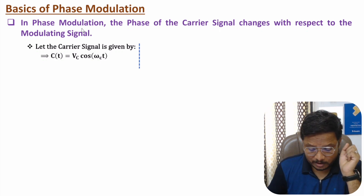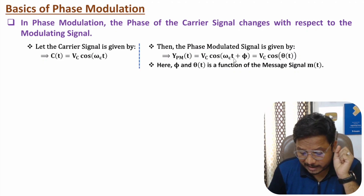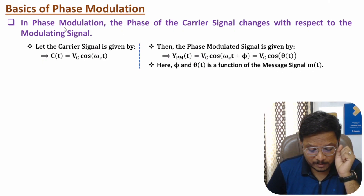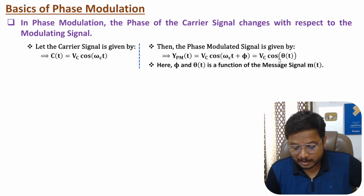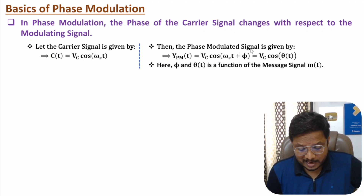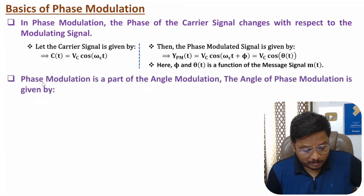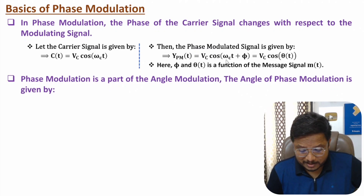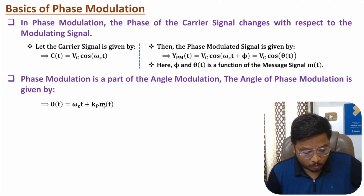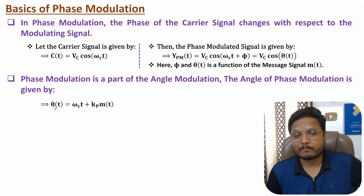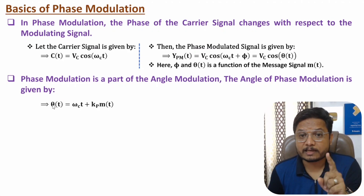In phase modulation, the phase modulated wave will be vc·cos(ωc·t + φ), where φ is a function of the message signal. Since phase modulation is a category of angle modulation, the signal is vc·cos(θ(t)), where θ(t) is a function of the message signal. So the phase modulated signal has a change in phase with respect to the message signal.